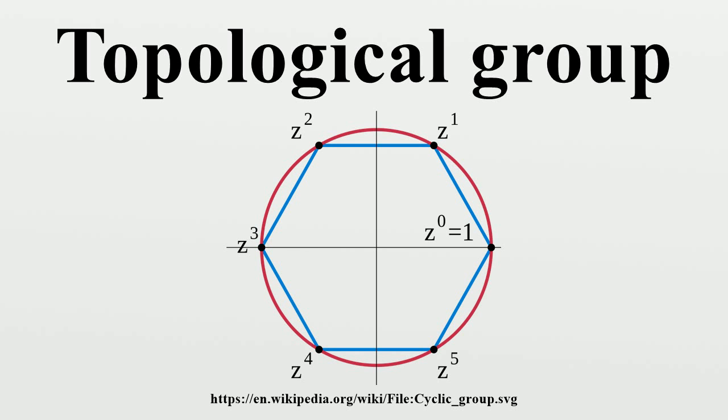If H is a normal subgroup of G, then the factor group G/H becomes a topological group when given the quotient topology. However, if H is not closed in the topology of G, then G/H will not be T0 even if G is.